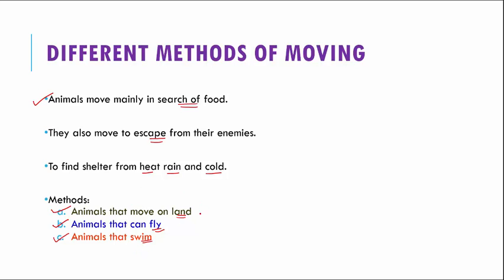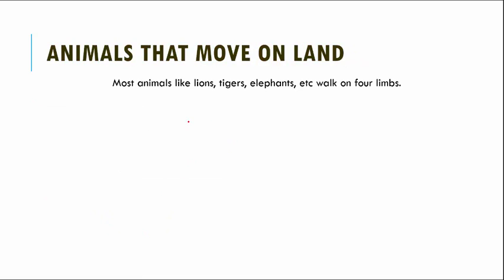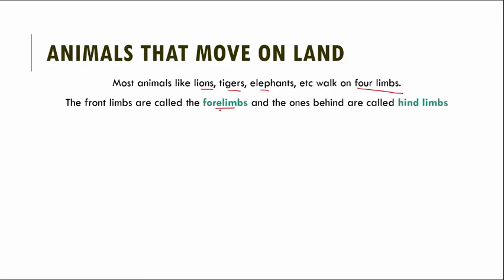The first category is animals that move on land. Most animals like lions, tigers, and elephants walk on four limbs — two front limbs and two back limbs. The front limbs are called forelimbs, while the back limbs are called hind limbs. Let us look at how forelimbs and hind limbs help animals move in different ways on land.